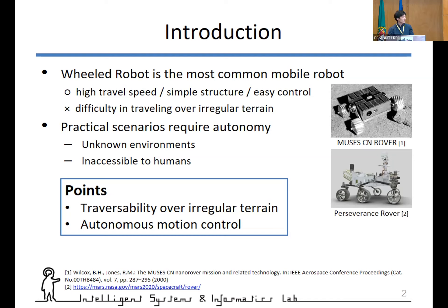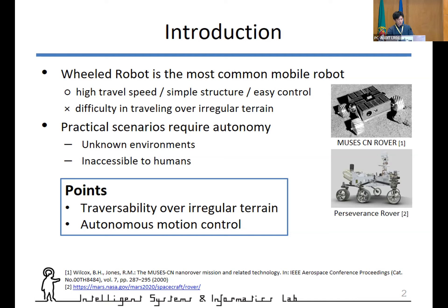However, this type faces difficult problems in traversing over irregular terrain, so it is needed to improve this point. Practical scenarios include works in unknown environments and areas dangerous to humans. Under such conditions, it is difficult for us to operate, and autonomy is required. So we focused on traversability over irregular terrain and autonomous motion control of the wheeled robot.